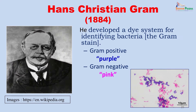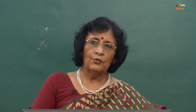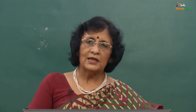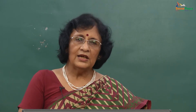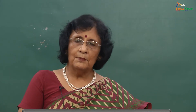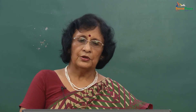Getting a microscopic view of organisms required staining techniques, first developed by Hans Christian Gram. He developed a dye system for identifying Gram-positive organisms (purple) from Gram-negative organisms (red). This color differentiation was based on the cell wall of these organisms, and antibiotics acting on the cell wall could be chosen based on whether the organism was Gram-positive or Gram-negative. This simple staining technique directly affected the treatment of patients.